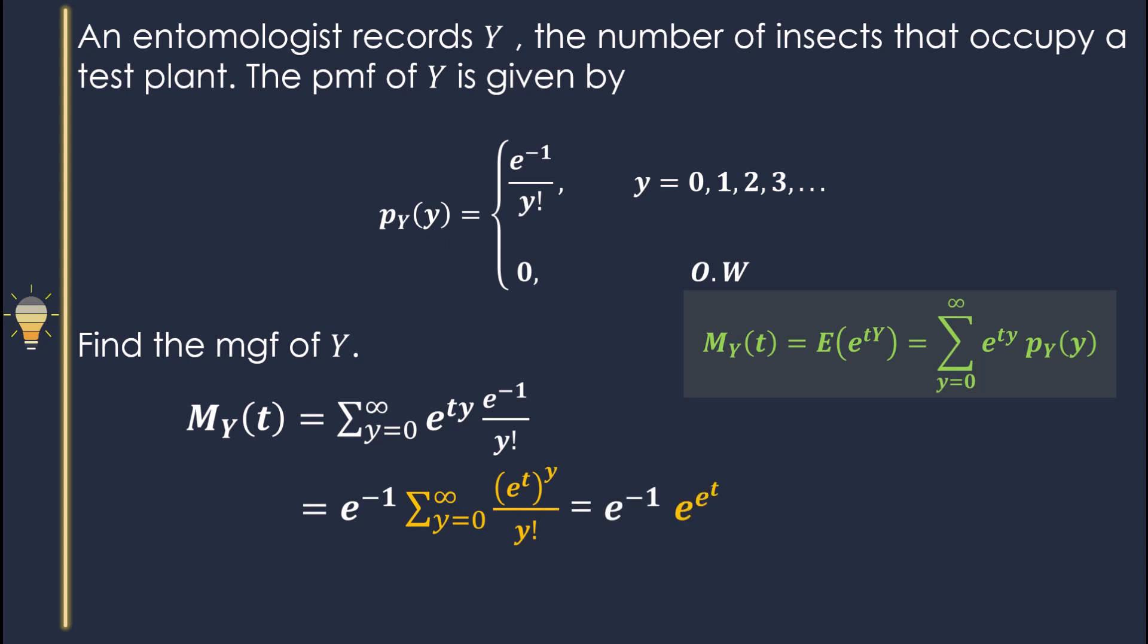Then we have summation Y goes from zero to infinity, e^t power Y over factorial Y. Then what is that part?